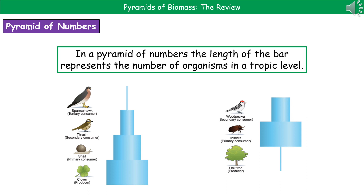Welcome to our review on Pyramids of Biomass. The first thing we're going to do is have a look at a different type of pyramid called the Pyramid of Numbers. The key thing about the Pyramid of Numbers is that the length of the bar that you draw is representative of the number of organisms in a given trophic level.